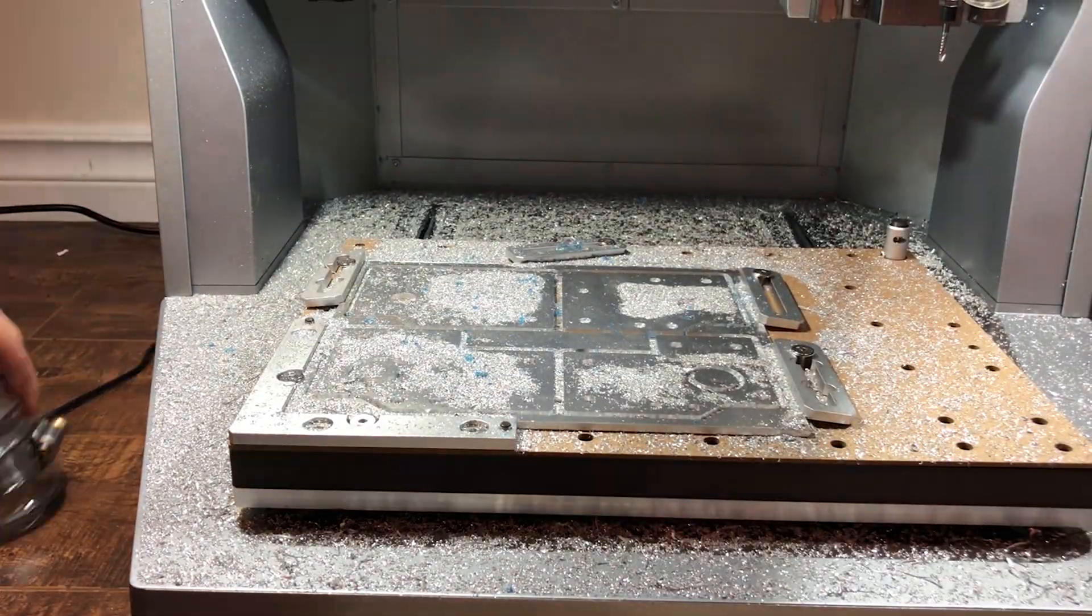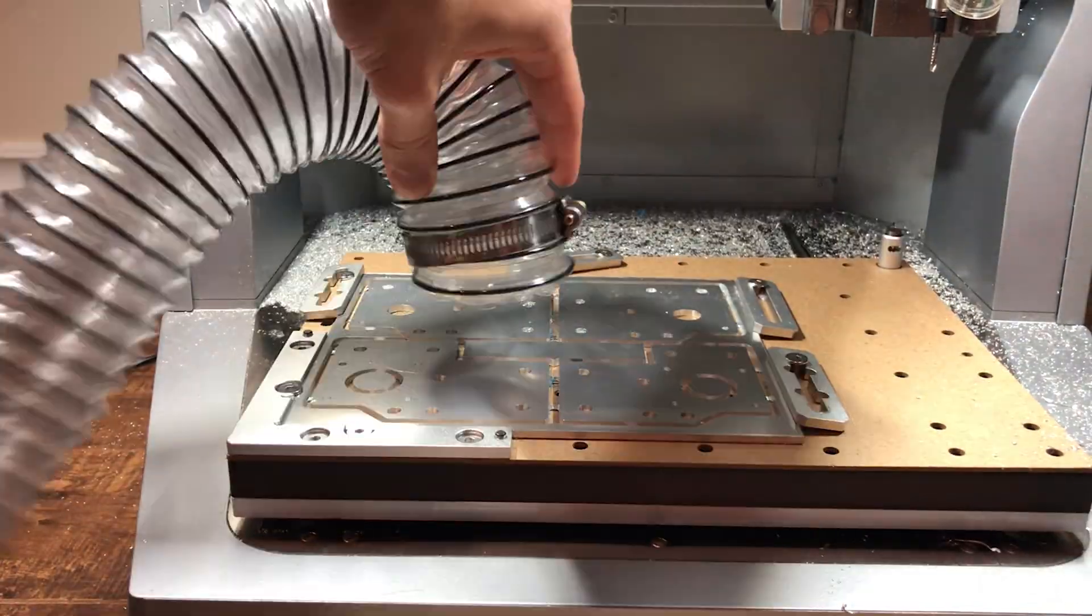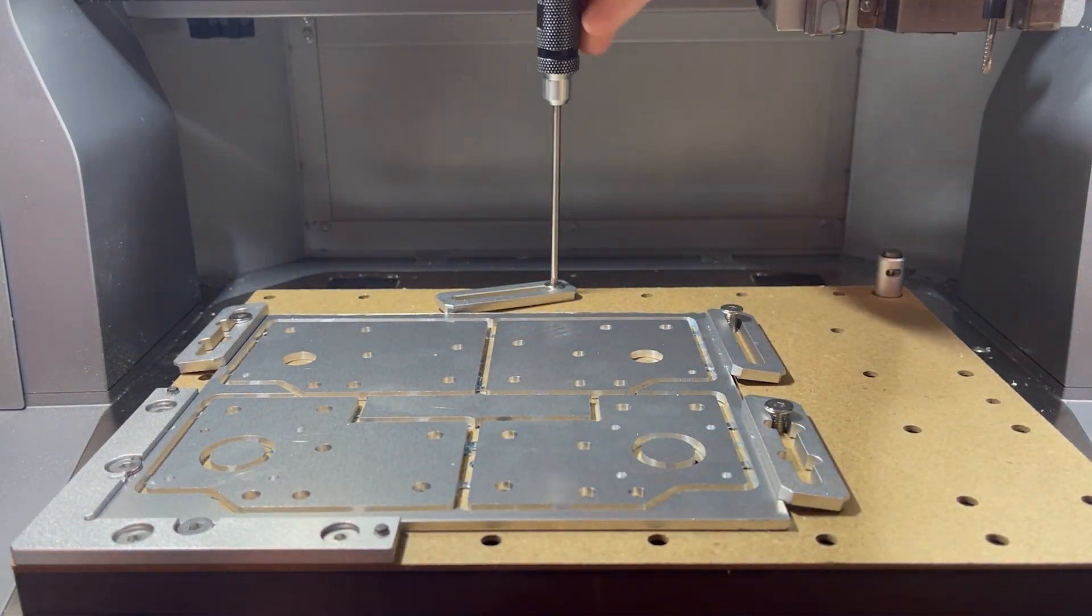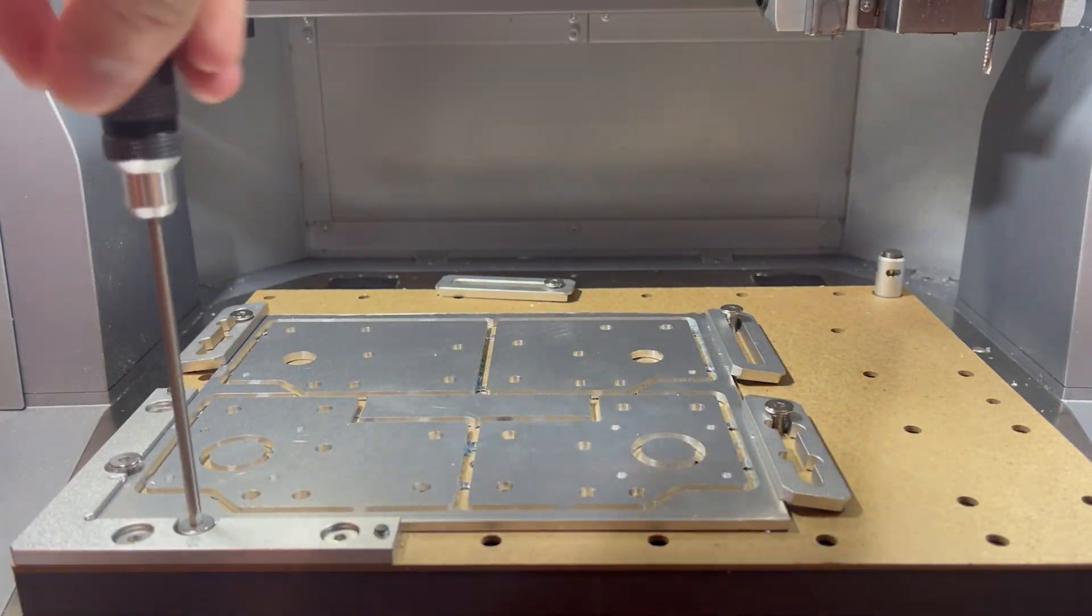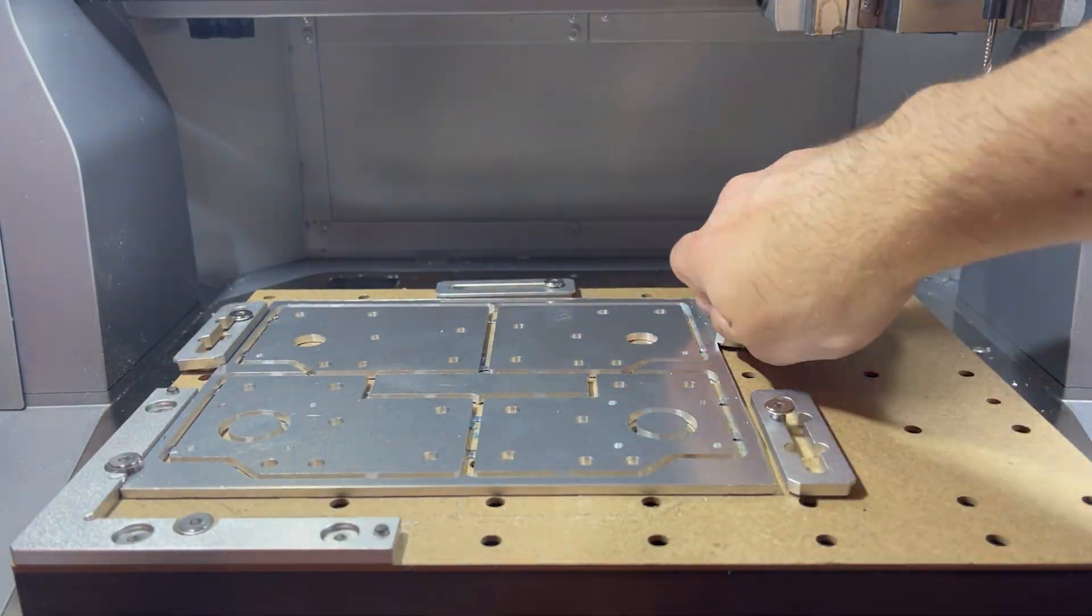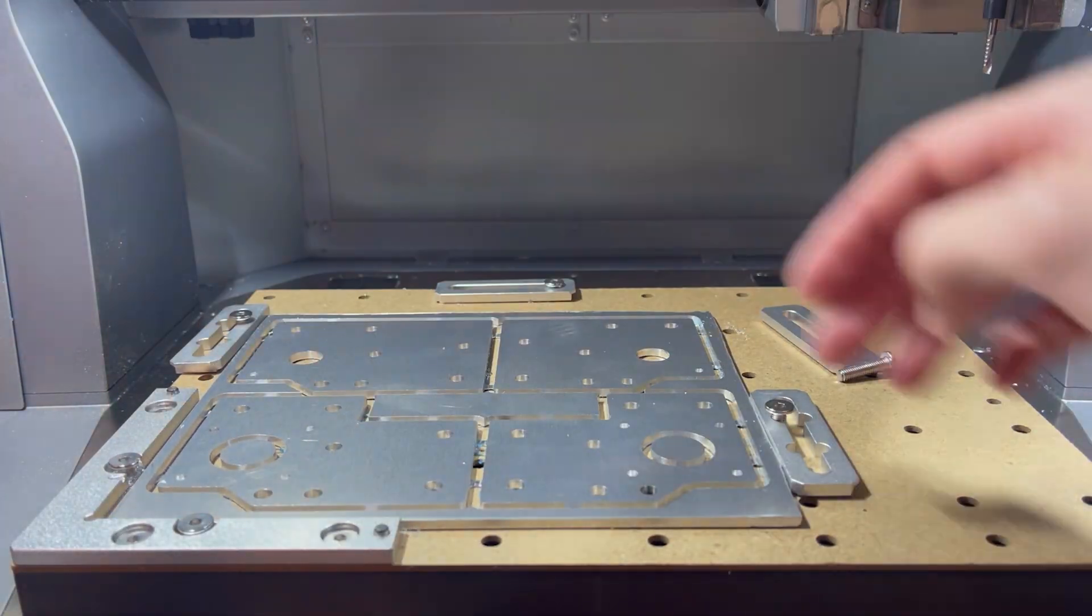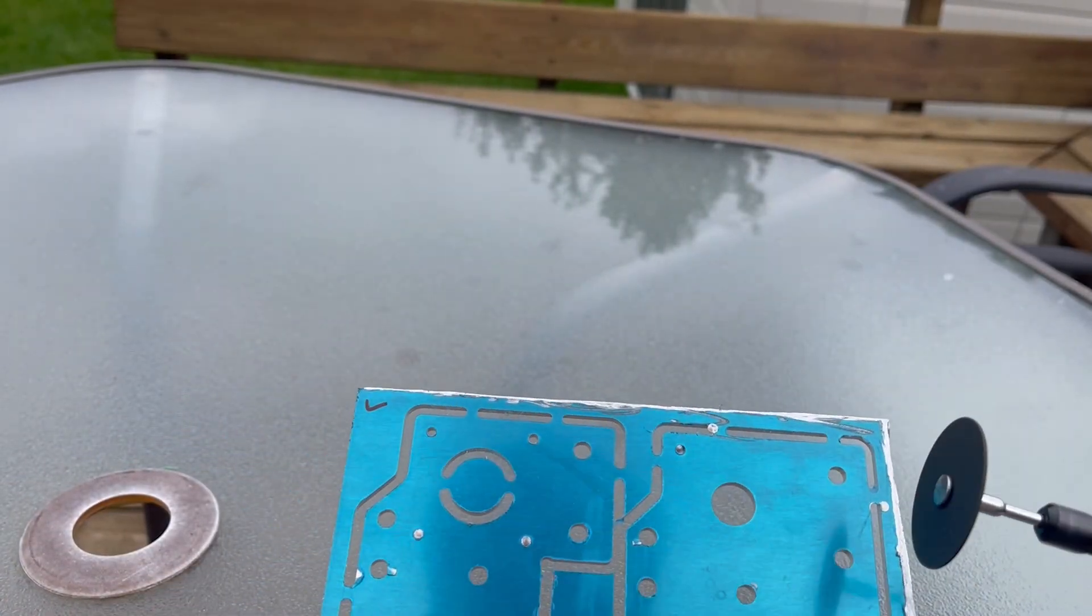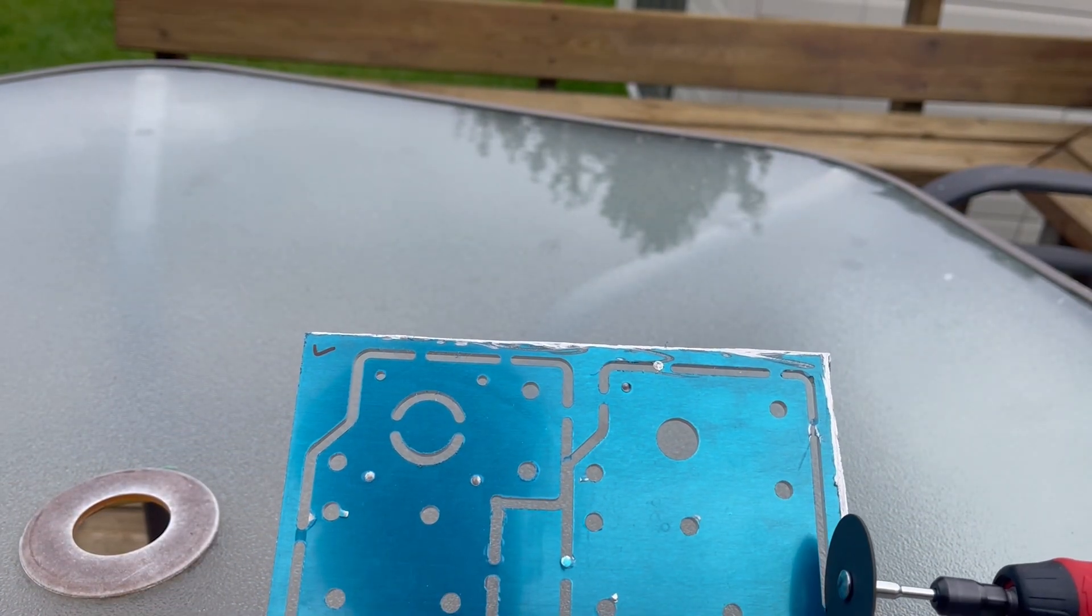Now that the parts are done here, we're going to quickly clean out all of these metal chips because this is in fact in my basement, and we don't want that stuff going all over the place. Now we get the satisfying part of removing all the clamps and freeing our aluminum plate.